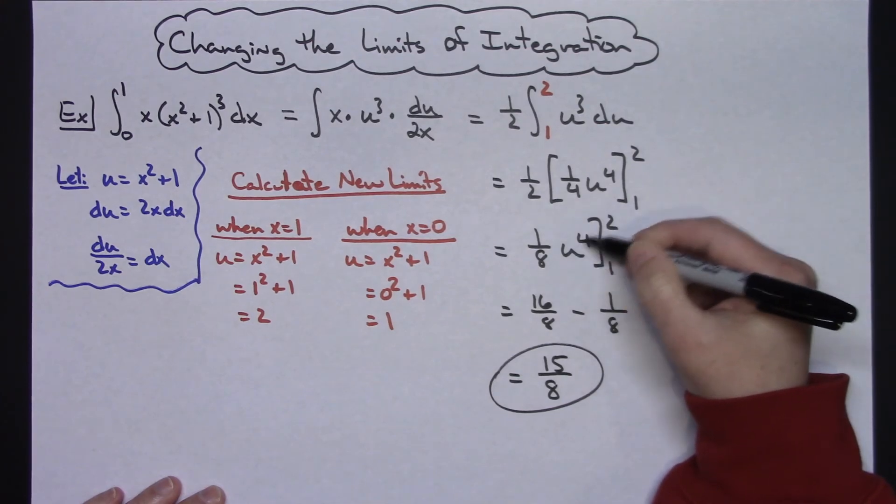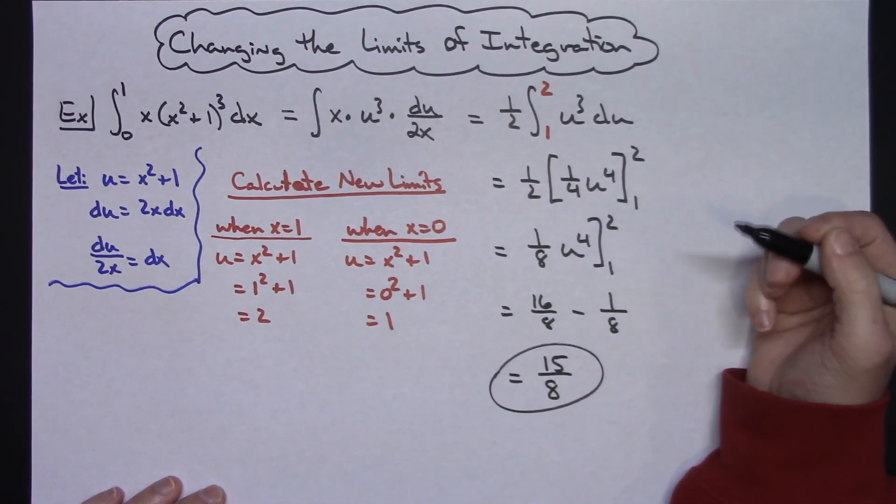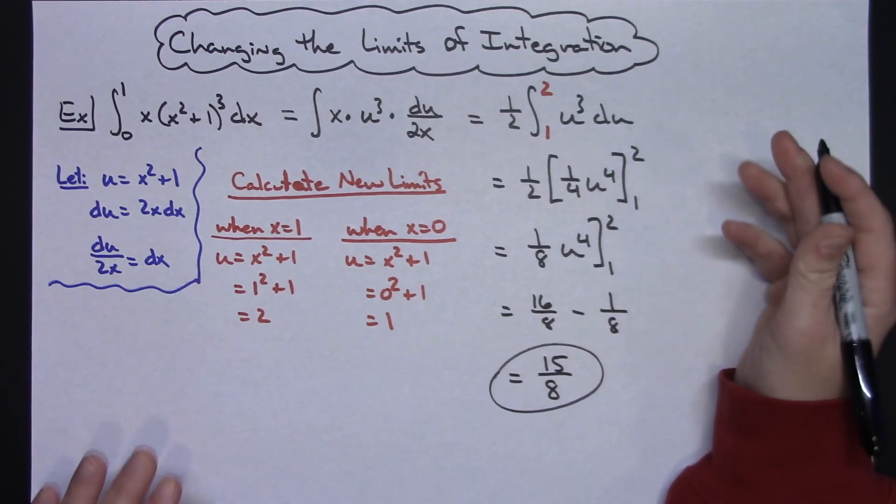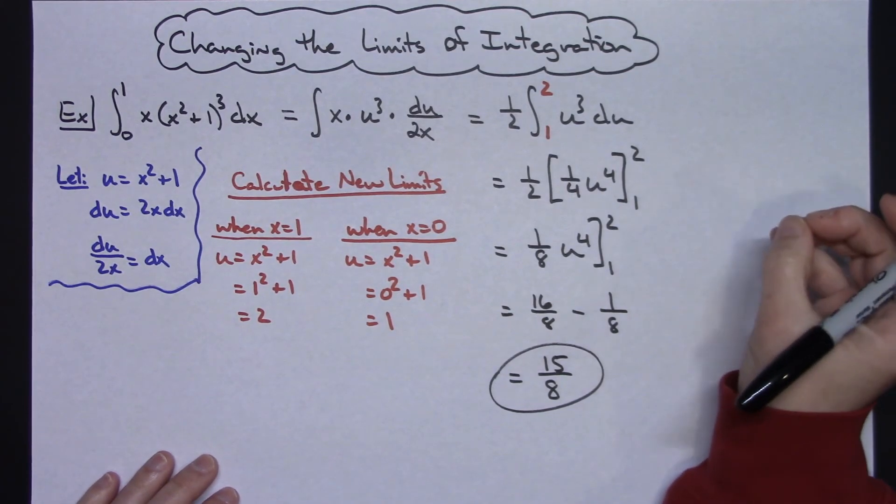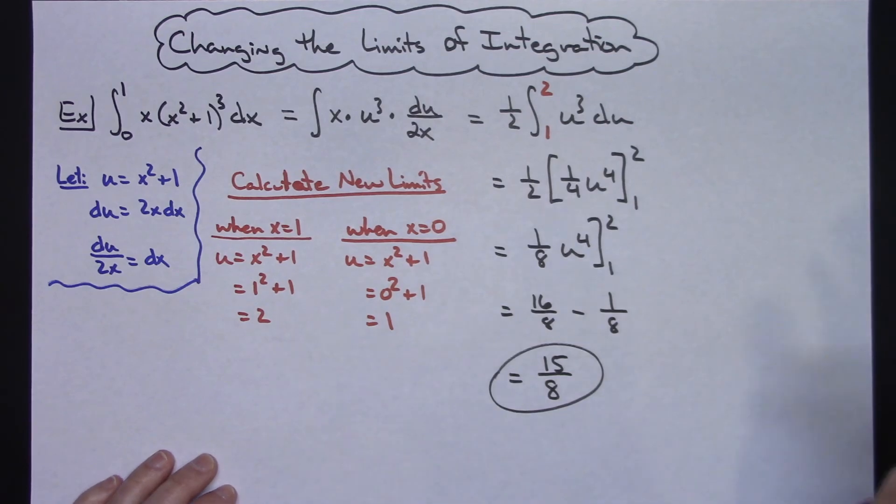Made it a lot easier, the arithmetic a lot easier there with changing those limits of integration. So just one quick example of why and when you should remove your limits of integration, when you should use them when they're in terms of x, when they're in terms of u. Just a nice kind of thorough explanation of that.